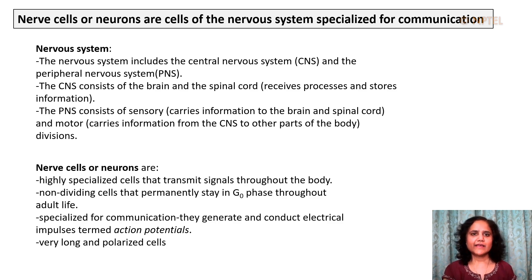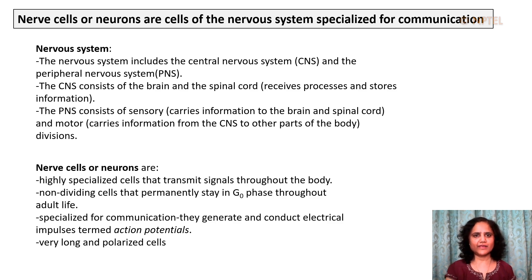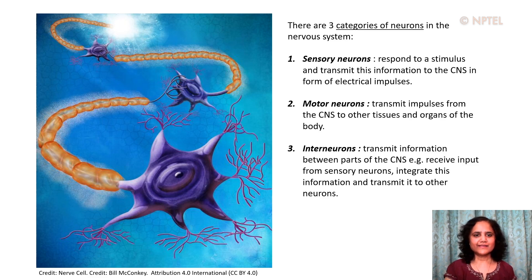The motor divisions carry information from the central nervous system to other parts of the body. Nerve cells or neurons are highly specialized cells that transmit signals throughout the body. They are non-dividing cells that permanently stay in G0 phase throughout an adult's life, specialized for communication. They generate and conduct electrical impulses termed action potentials, and these cells are very long and highly polarized.